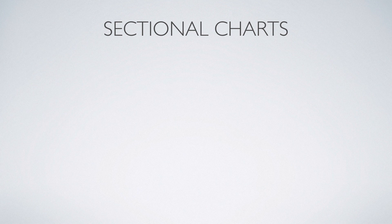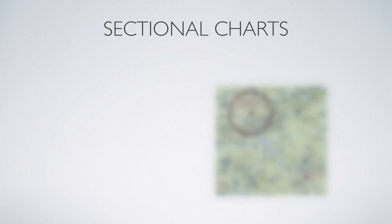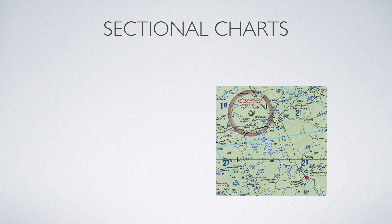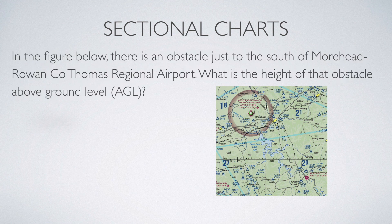We're doing another Part 107 test prep question of the week, and this week we are looking at sectional charts. Here is a small piece of a sectional chart, and the question is: in the figure below, there's an obstacle just to the south of the Moorhead Rowan County Thomas Regional Airport. What is the height of that obstacle above ground level, or AGL?